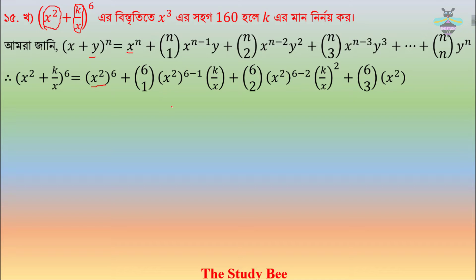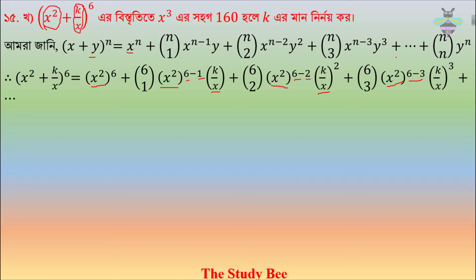x is square, n minus 1, n equals 6, 6 minus 1, then n of 2, 6 of 2, then x is square, n minus 1, n equals 6, 6 minus 1, then y, y is square.